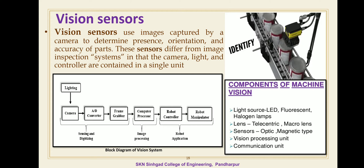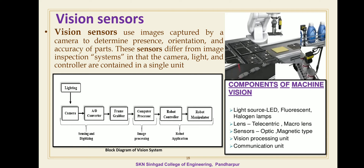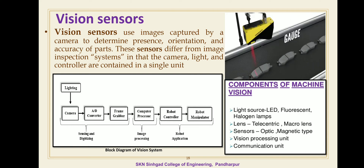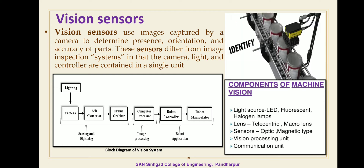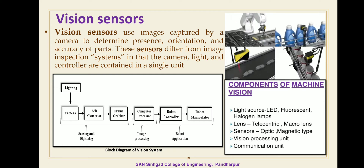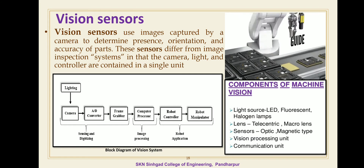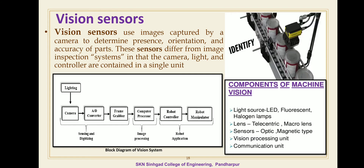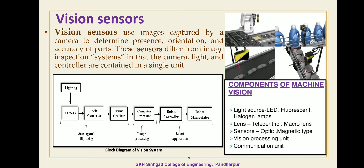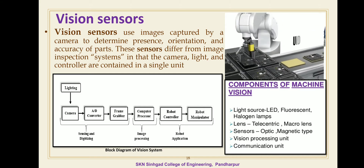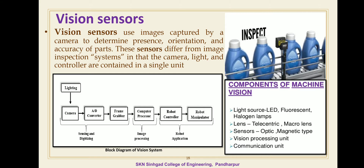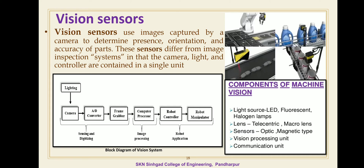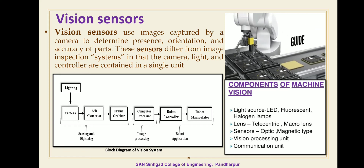Vision sensors use images captured by the camera to determine presence, orientation, and accuracy of a part. You can directly decide the position, orientation, and presence of an object in the robot hand with the help of a vision sensor. These sensors differ from image inspection systems in that the camera, light, and controller are contained in a single unit.